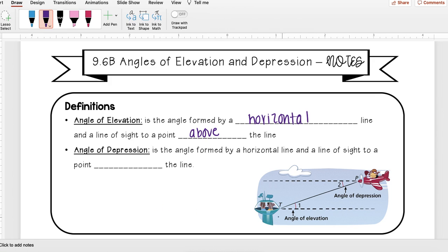So looking at this picture here, you see these guys in a watchtower and they're looking up at the plane. This angle right here, angle one, is the angle of elevation. So here's that horizontal line.